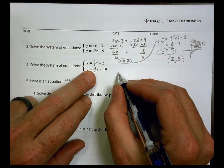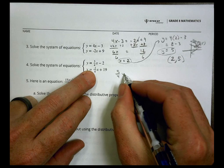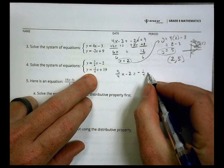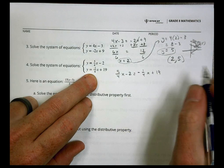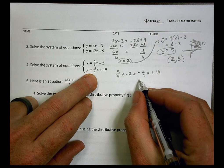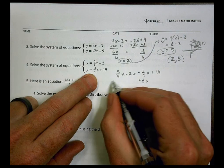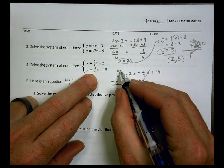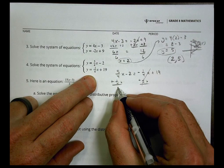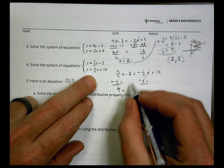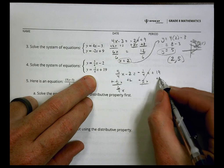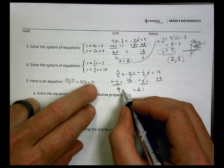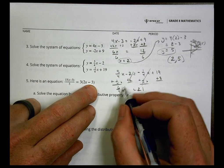Next one. We're going to set those equal to each other. So we're going to do 5/4 x minus 2 equals negative 1/4 x plus 19. I'm going to add 1/4 x to both sides. So 5/4 plus 1/4 is 6/4 x. We'll add 2 to both sides. 19 plus 2 equals 21.